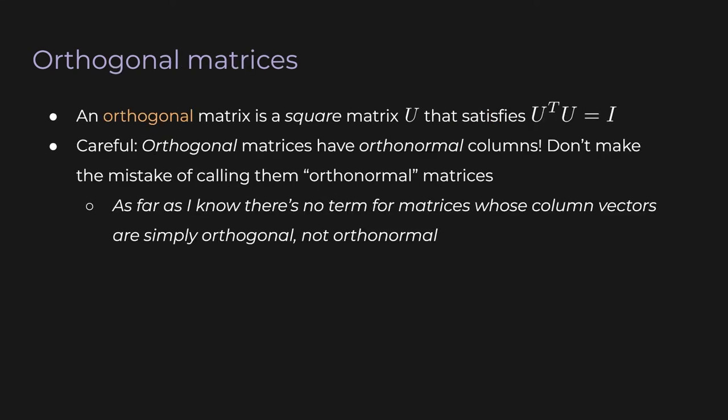Now here's the last new concept: an orthogonal matrix is a square matrix u that satisfies u transpose times u equals the identity matrix. Note that this is different from the previous property, because here we've specified that u must be square. One word of caution: the term 'orthogonal matrix' can be confusing. An orthogonal matrix has orthonormal columns — not merely orthogonal columns. Let me say it again: an orthogonal matrix has orthonormal columns.